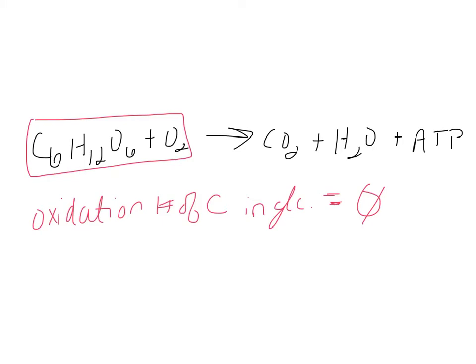Let's briefly overview cellular respiration. We've got two kinds — aerobic and anaerobic, or fermentation respiration. They all start with glycolysis. Then, depending on whether oxygen is present, we go into either the Krebs cycle and electron transport chain, or the fermentation route. Our focus first will be on aerobic respiration when oxygen is present.